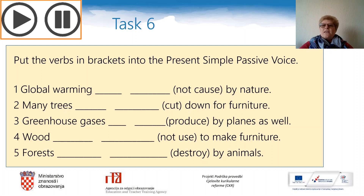Sad ćemo malo vježbati tvorbu present simple pasiva. Sjetite se ove formule i stavite glagole u zagradama u present simple pasiv. Put the verbs in brackets into present simple passive. Remember that we need present simple of the verb 'to be' and past participle of the main verb. You will have to pause the lesson and write down these sentences into your notebooks.